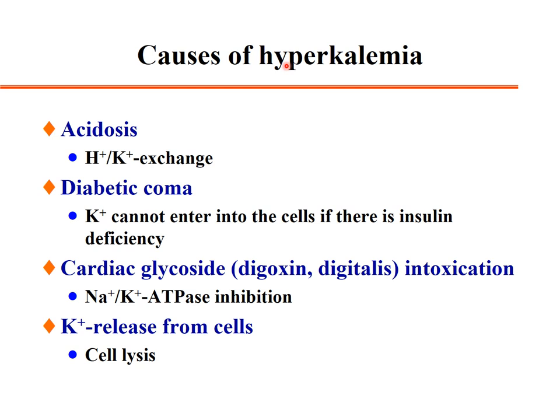Causes of hyperkalemia: most importantly, acidosis — increased proton concentration causes proton-potassium exchange in cells and the kidney, leading to hyperkalemia. Diabetic ketoacidosis or diabetic coma, where inappropriate insulin effect means potassium cannot enter cells. Cardiac glycoside intoxication such as digoxin or digitalis alters sodium-potassium ATPase and can cause or worsen hyperkalemia.